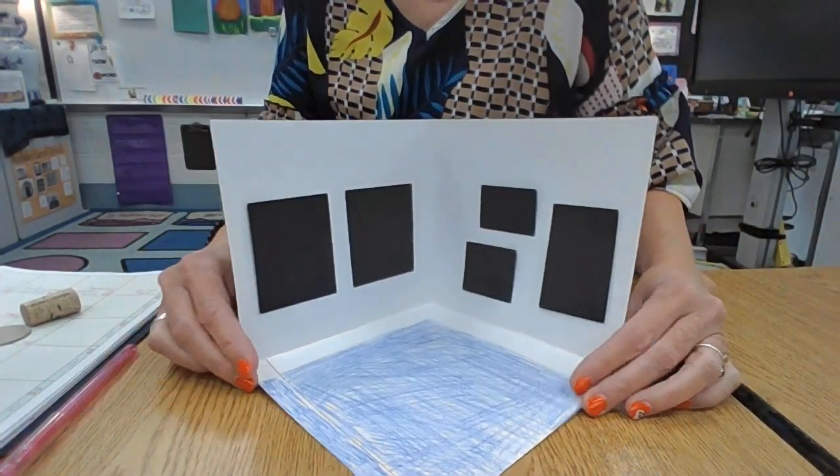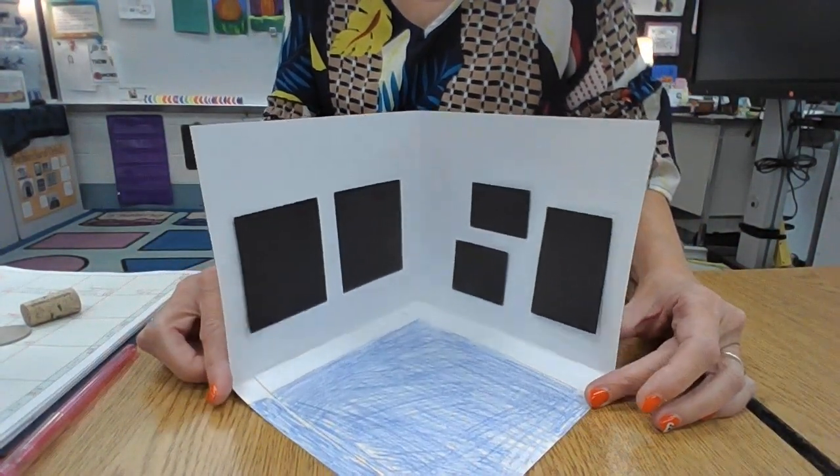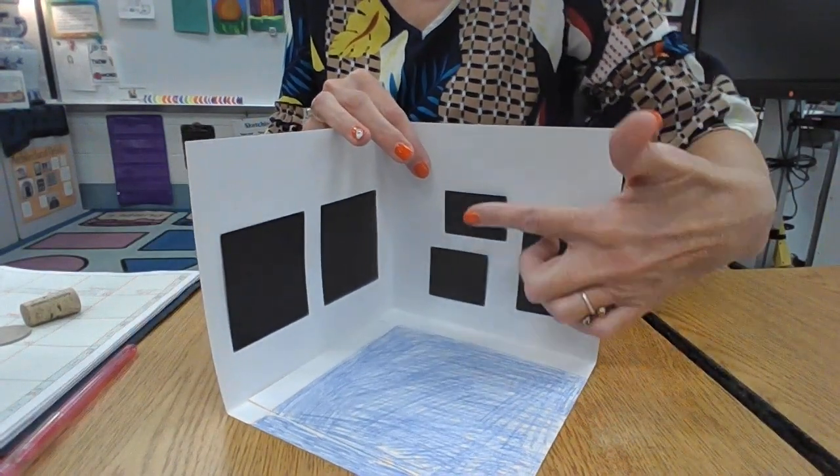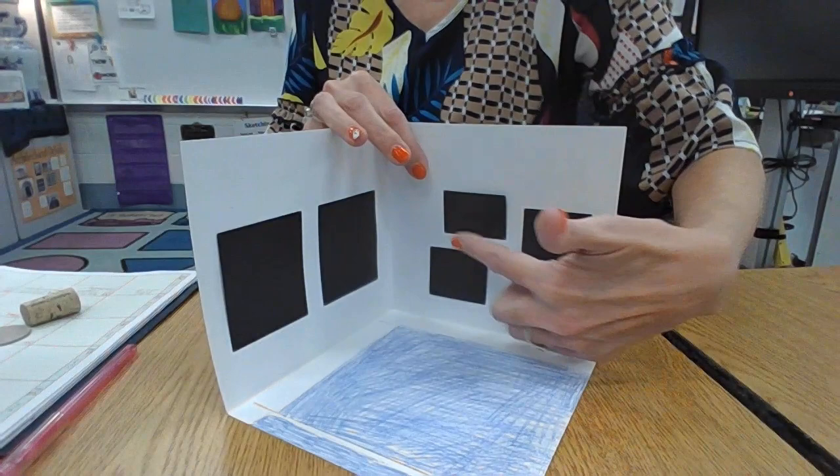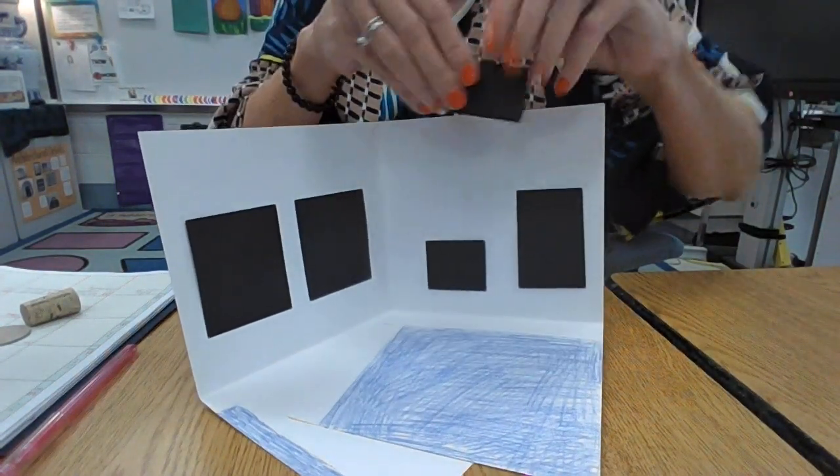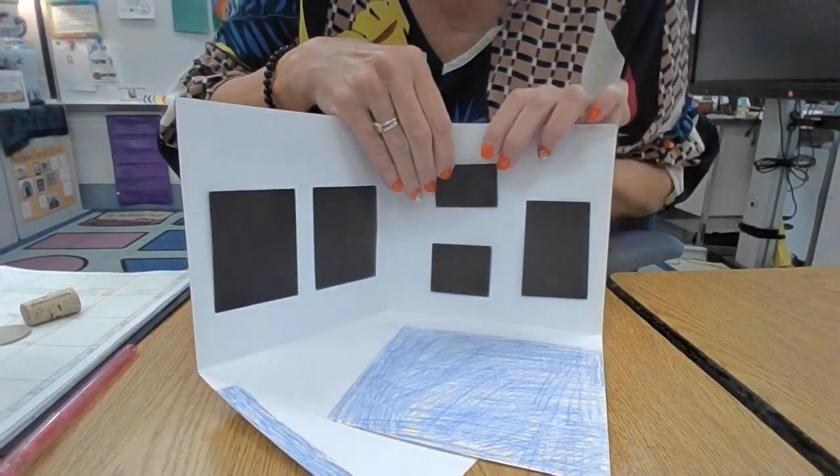So if I close it up, now you can see how my gallery would look. And then if I'm not sure I like that, if I want this to be up a little bit higher, if I want these to be the same, if I want that centered, I can just undo the tape just real easily and rearrange it.